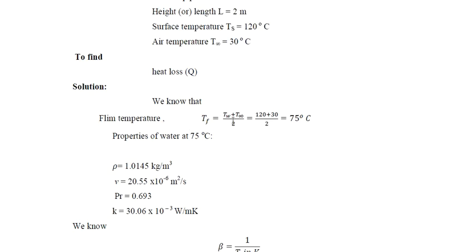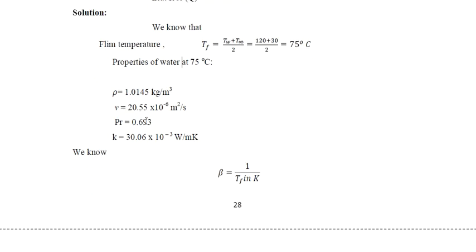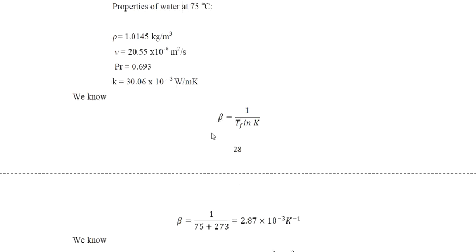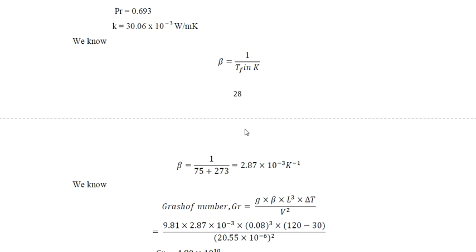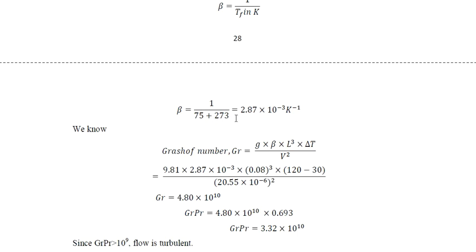Film temperature = (T_w + T_∞) / 2 = (120 + 30) / 2 = 75°C. Properties of air from the data book at 75°C: density = 1.0145 kg/m³, ν = 25.55 × 10⁻⁶ m²/s, Prandtl number = 0.693, k = 30.06 × 10⁻³ W/m·K. Beta = 1 / T_f(K) = 1 / (75 + 273) = 1/348 = 2.87 × 10⁻³ K⁻¹.